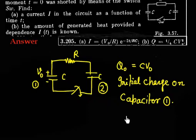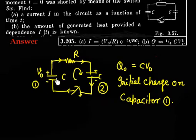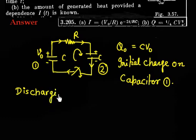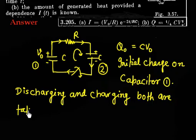When you close the circuit, this charge will try to go into the resistor, flow through, and complete the circuit. So this charge is basically trying to charge the second capacitor while the first one is discharging. So this is a case where charging and discharging both are taking place simultaneously.